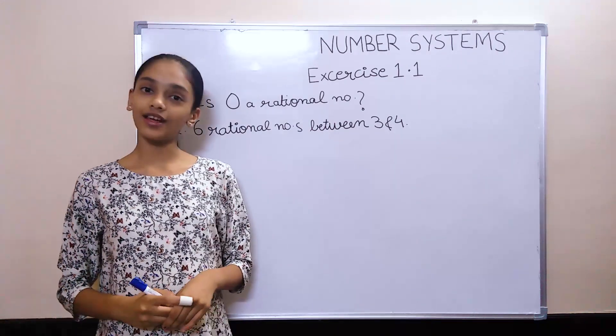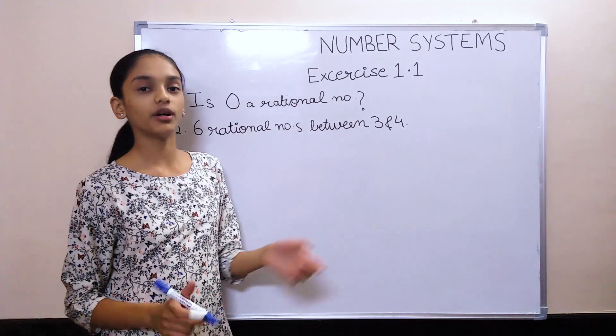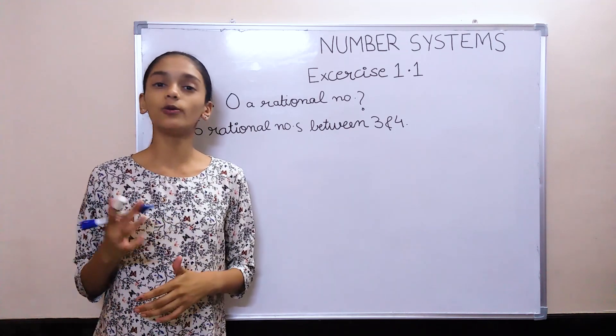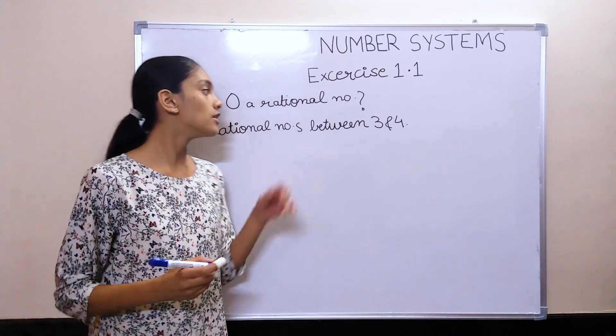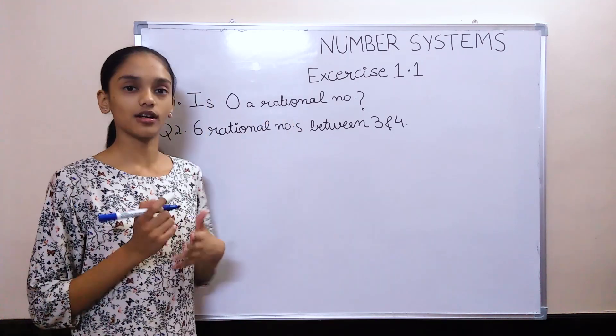The first question in Exercise 1.1 is: is 0 a rational number and can it be in the form of P by Q, where P and Q are integers and Q is not equal to 0? All these conditions given in the question define what is a rational number.